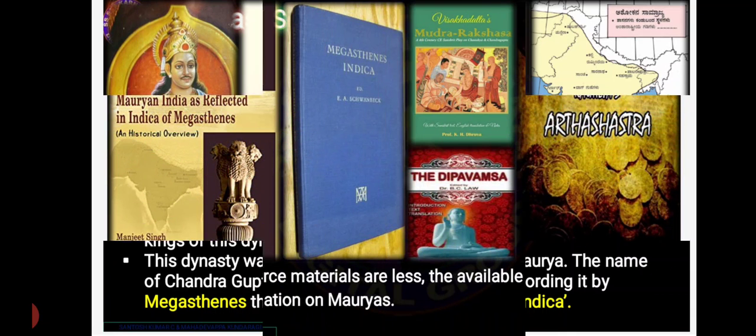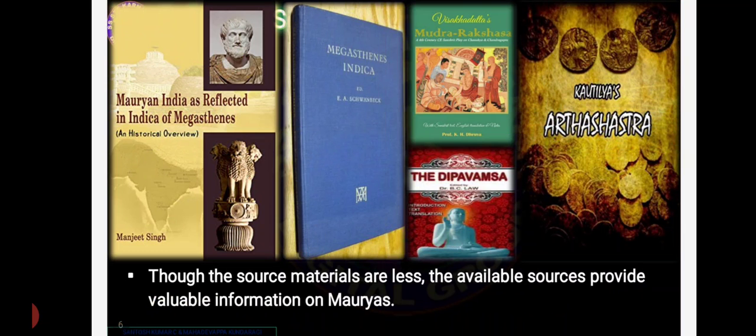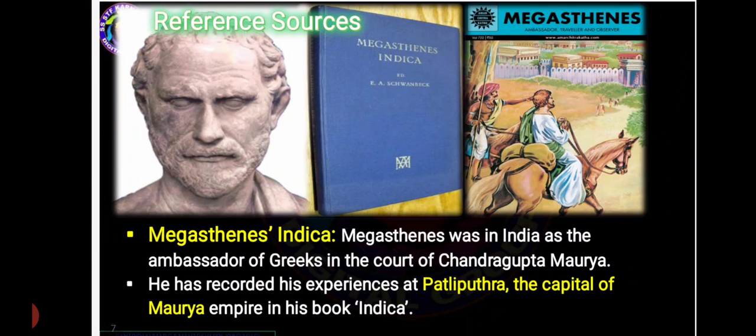We get a lot of information from these materials. Megasthanes, a Greek ambassador, lived in Chandragupta Maurya's court. His experiences in Pataliputra, the capital of the Mauryan Empire, are found in Indica, the book of Megasthanes.